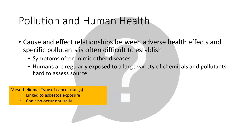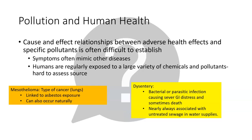For example, mesothelioma is a type of lung cancer. Mesothelioma can occur perfectly naturally without any specific exposure to a toxin or pollutant. However, it's also very often associated with exposure to things like asbestos, which we learned about as an indoor air pollutant in unit seven. Things like dysentery, on the other hand, is a disease — a bacterial or parasitic infection that can get into the GI tract of people and cause all kinds of GI distress and sometimes death, depending on severity or whether it gets treated. That is almost always associated with untreated sewage pollution. So sometimes we can identify a specific cause and effect relationship almost right away; other times it can be more difficult.